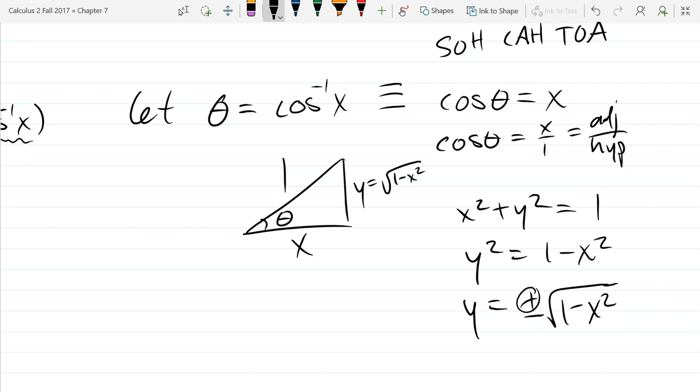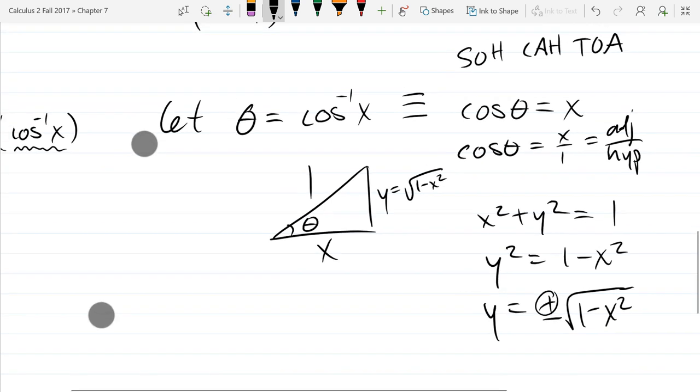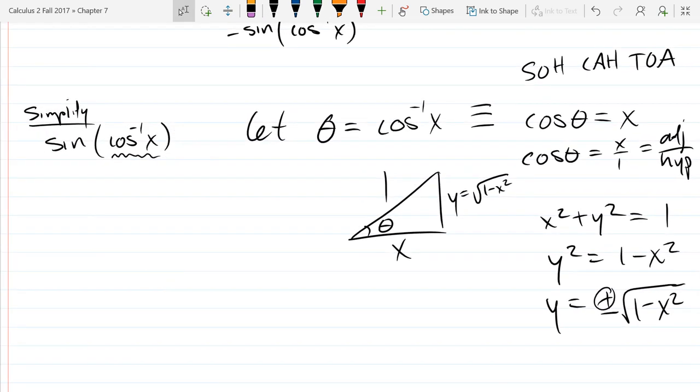So we don't really need the y variable at all. Because we already figured out what y is in terms of x. So I just wrote down that theta was cos inverse. So we're going to use this substitution right in here now.